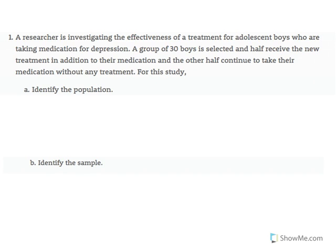For this study, part A states we must identify the population and part B states we must identify the sample. To do so, let's go back to the research scenario and underline information that's important. First, we know that we're working with adolescent boys with depression, and we also know that of that group, we're going to select 30 boys with depression to be allocated into these two different treatment conditions.